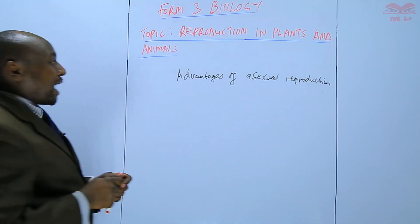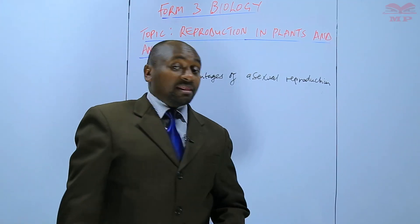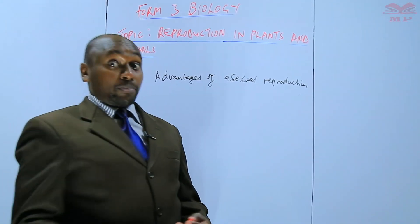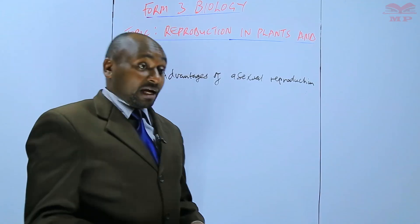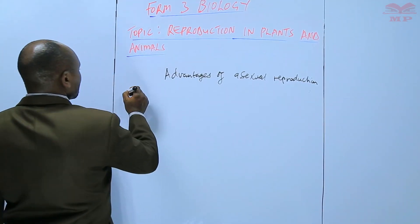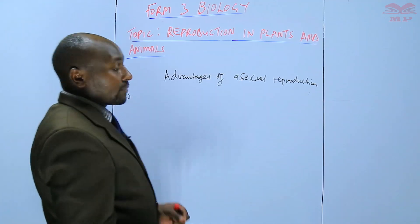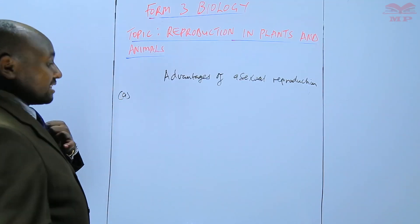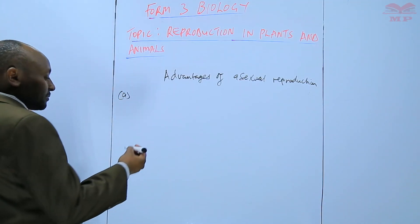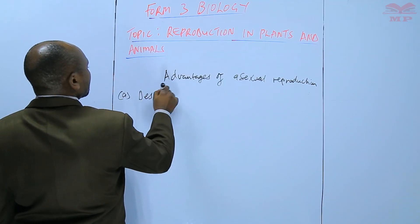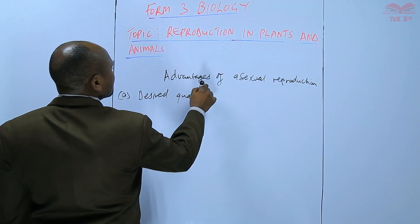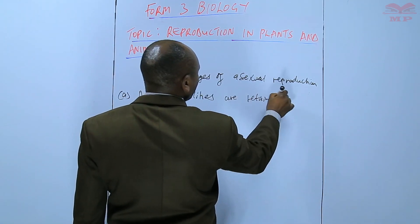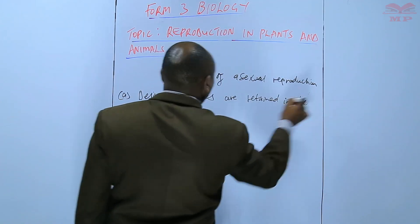Asexual reproduction is the type of reproduction that does not involve the gametes, or does not involve fertilization. In this case, a single individual is responsible for bringing forth young ones. This has the advantage that desired qualities or superior qualities are retained in the offspring.